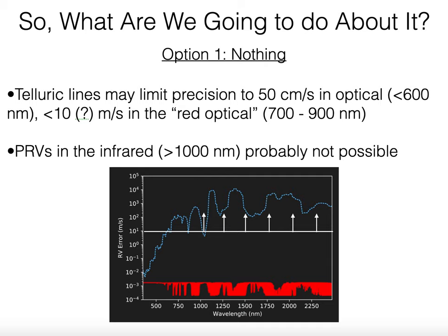So what are we going to do about it? There are four options to consider. The first is nothing. Telluric lines probably limit precision to about 50 centimeters per second in the optical at wavelengths less than 600 nanometers, but probably meters per second in the red optical—say 700 to 900 nanometers. That's unfortunate because that spectral range is extremely valuable for observations of low-mass stars. And except for some tiny windows like the Y band just longward of one micron, PRVs in the infrared are probably not possible without doing something about the telluric lines.